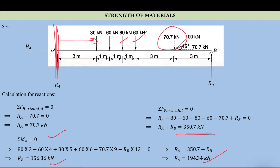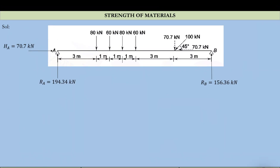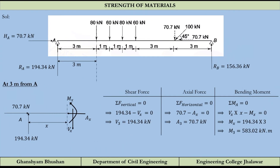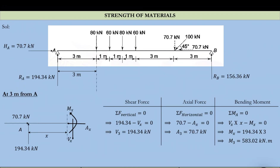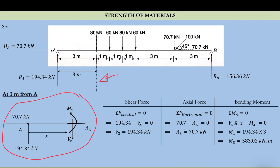The second step is to draw the free body diagram. We put all forces on the beam and show them in the free body diagram. Now we just take the section - the dashed line shows the section at 3m from A - and we will find shear force, axial force, and bending moment at each section.